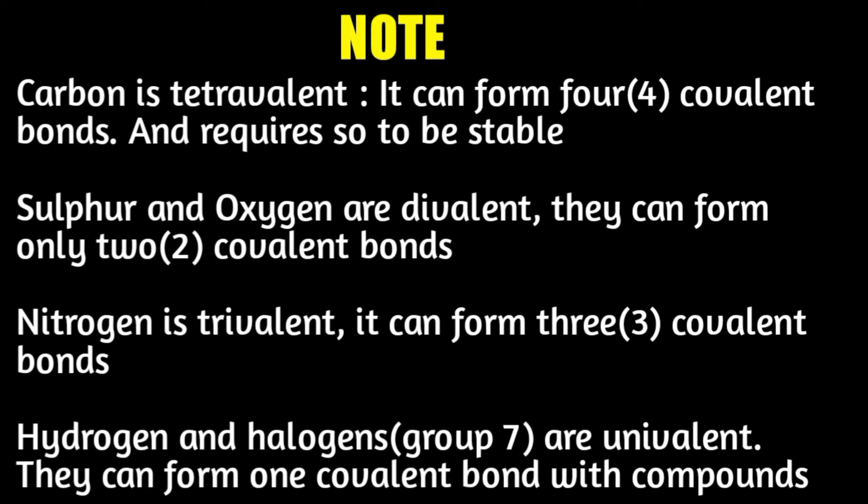Before you start drawing amino acids, note: carbon is tetravalent — it can form four covalent bonds and requires four to be stable. Sulfur and oxygen are divalent — they form two covalent bonds. Nitrogen is trivalent — it forms three covalent bonds. Hydrogen and halogens (group seven) are univalent — they form only one covalent bond. So when drawing carbon, balance it with four bonds or fill remaining bonds with hydrogen.